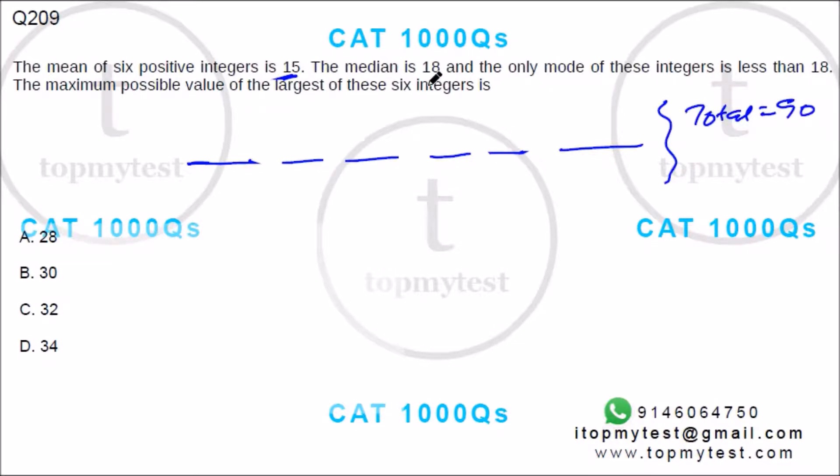Now you have even number of numbers. So median is 18 which means average of these two middle numbers should be 18. Which means these two numbers should add up to 36.